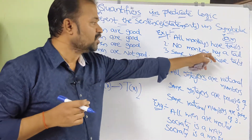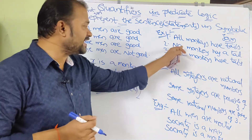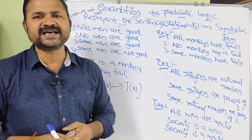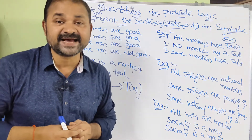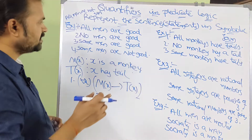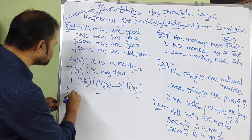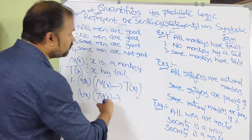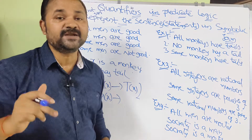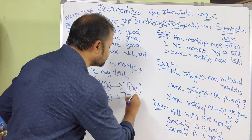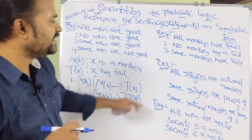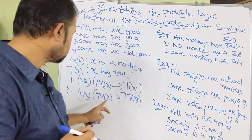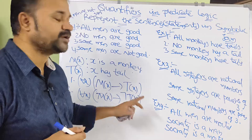Second sentence: 'No monkey has a tail.' We can rewrite this as 'All monkeys have no tail.' So: for all x — monkeys means M(x), implication symbol, and no tail means negation of T(x). So: ∀x(M(x) → ¬T(x)).